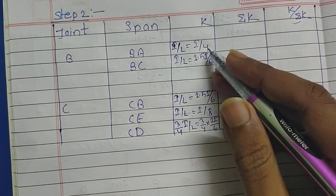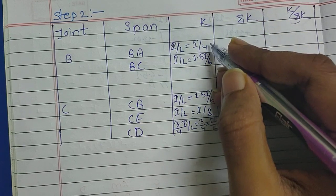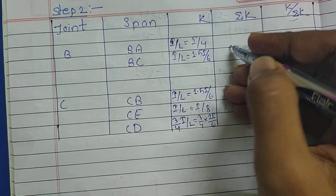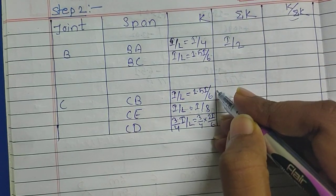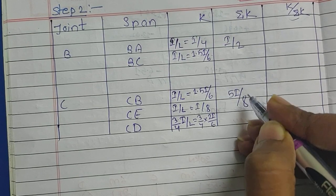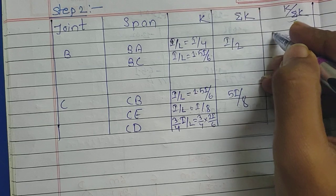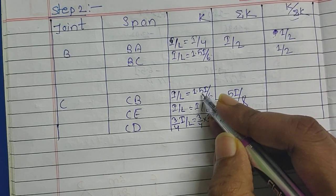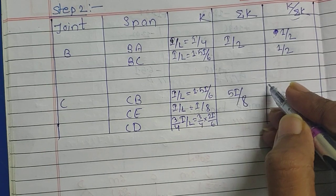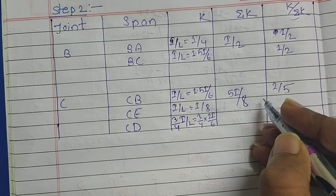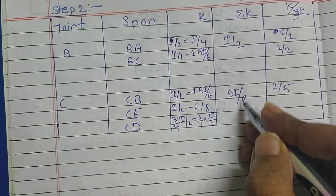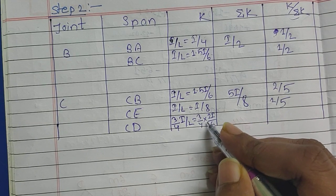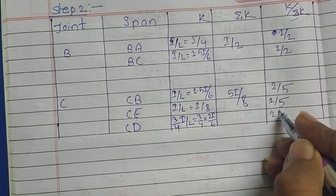Now I have calculated the values of K. To find summation K, add the two numbers for joint B, add the three numbers for joint C, and add the two numbers for the remaining joints. On adding we get I/L for joint B, and for joint C we get 5I/8. On dividing, the distribution factors are: 1/2 and 1/2 for joint B; 2/5, 1/5, and 2/5 for joint C.